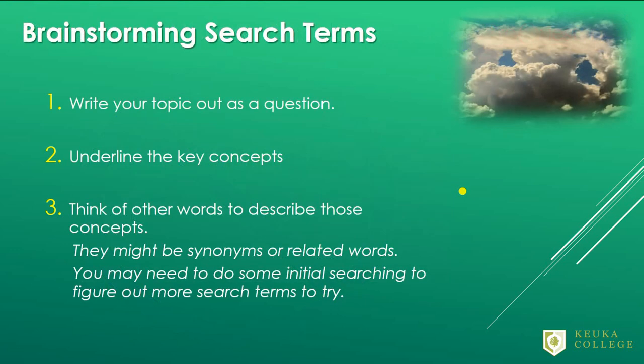So, how do we come up with these special search terms? It's easy — just follow these three simple steps. First, write out your topic as a question. Second, underline the keywords or concepts in that question. Third, look at those keywords or concepts and try to think of synonyms or related words. The reason we do this is because not all authors are going to use the same word to describe the same thing.